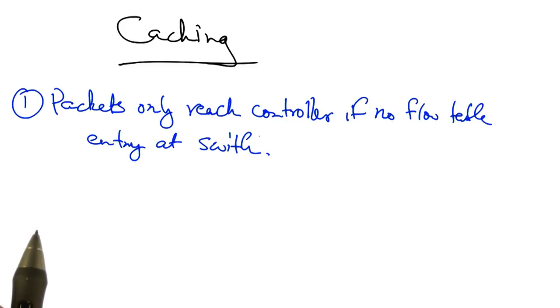If, on the other hand, there is a flow table entry at the switch, then the switch can simply forward the packets, rather than sending them to the controller.